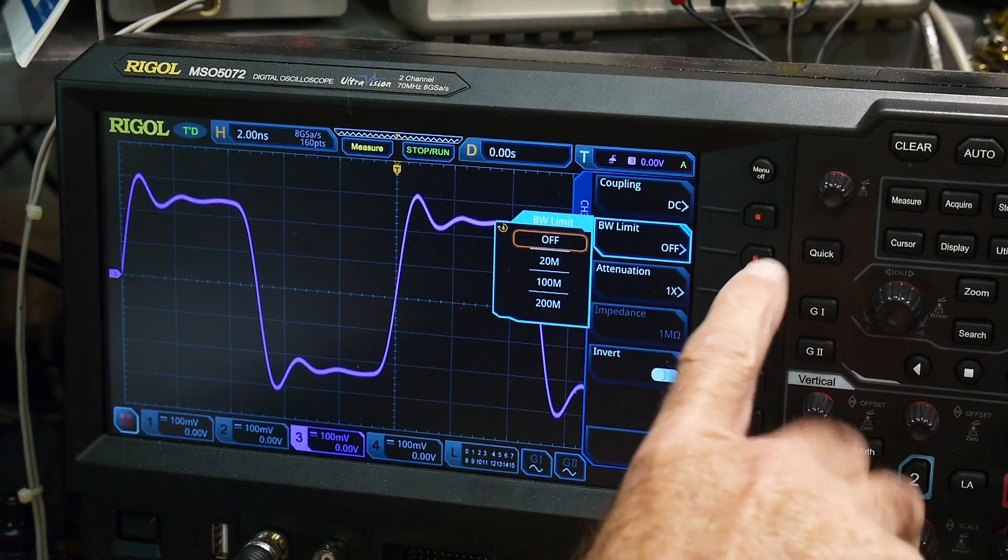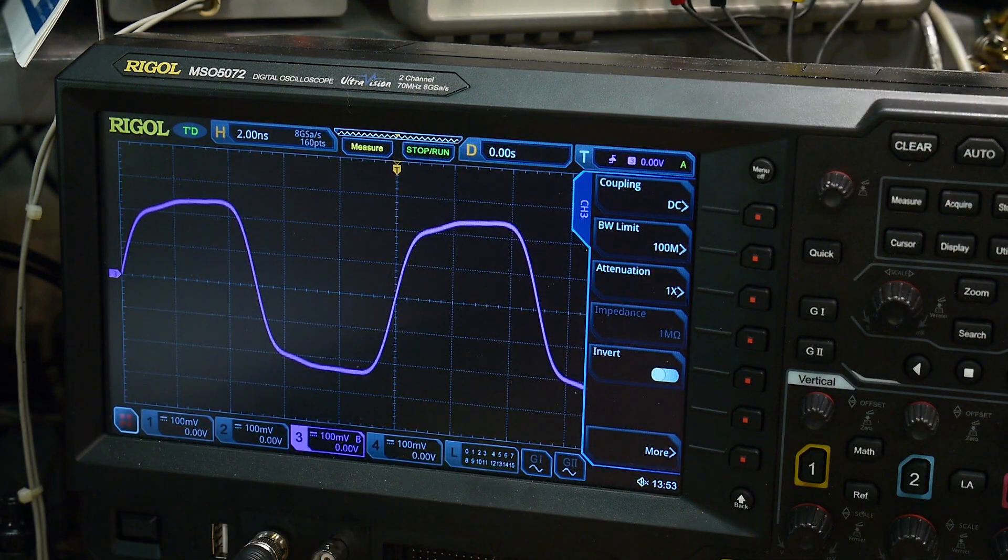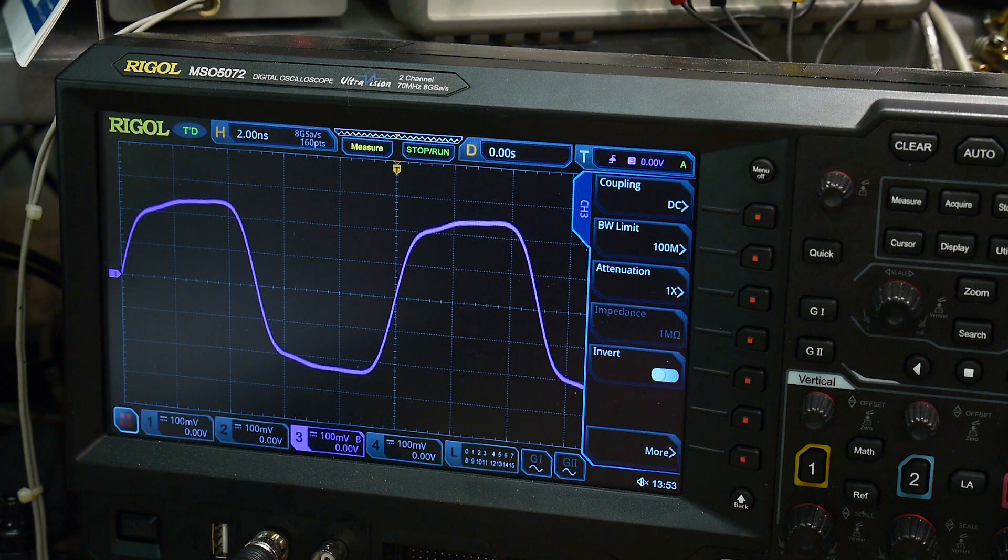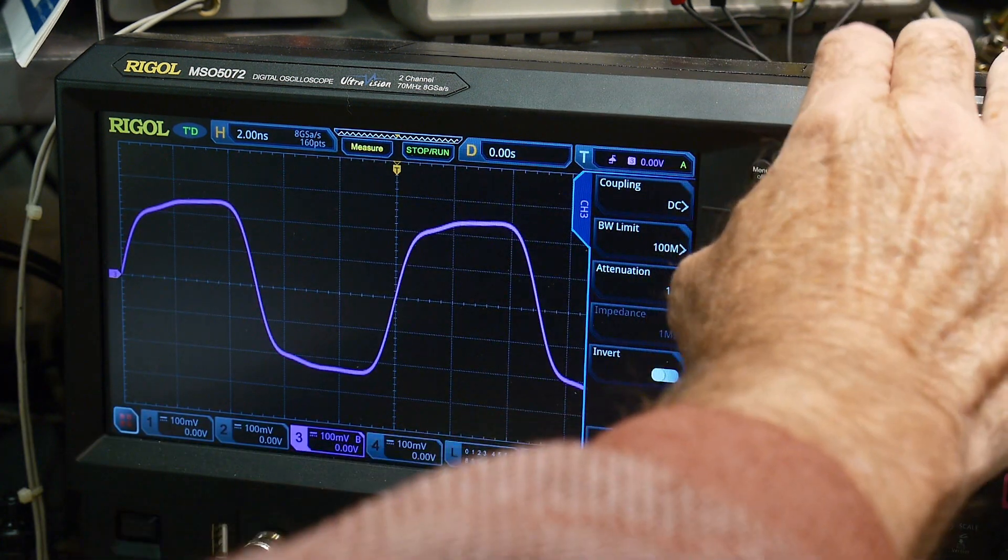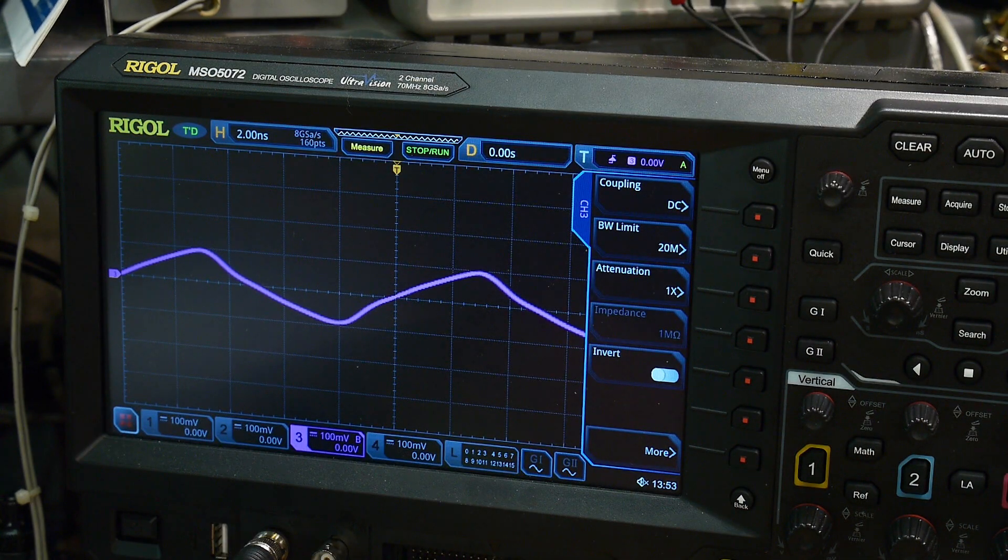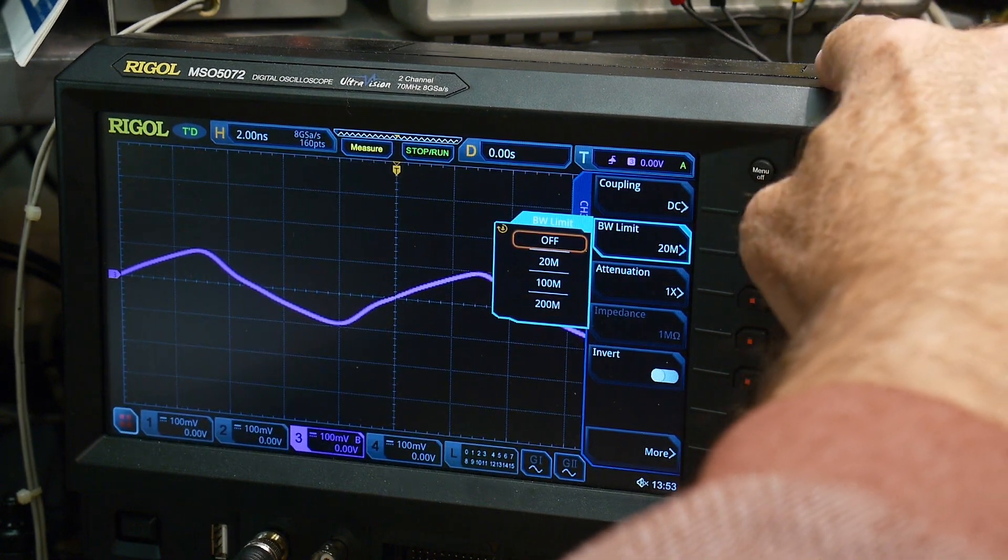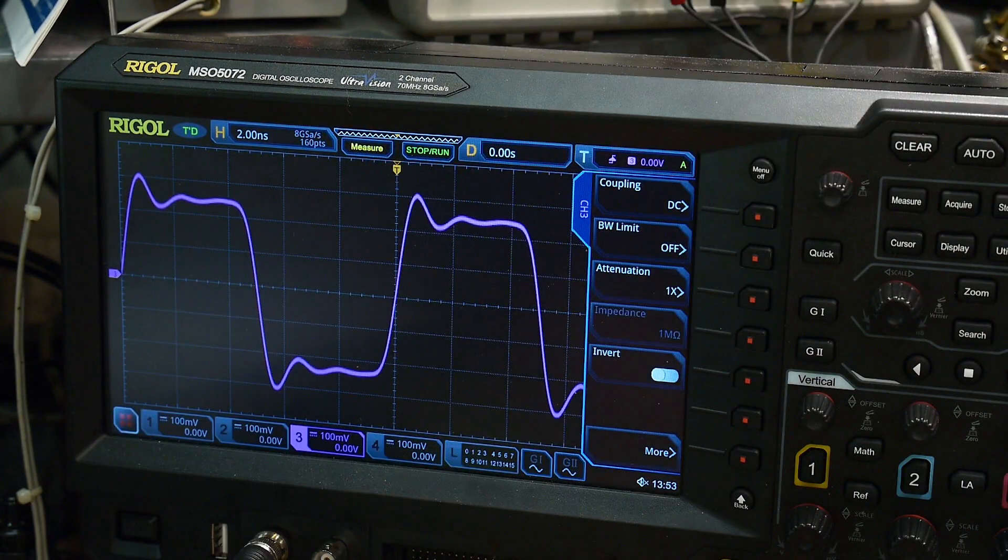We can limit bandwidth. I can limit the bandwidth to 100 megahertz. So your oscilloscope may look like this. Or your oscilloscope may be a 20 megahertz oscilloscope, and then it will look like that. So let's go back off again. There's 350 megahertz.